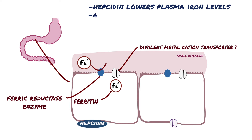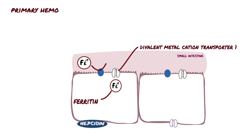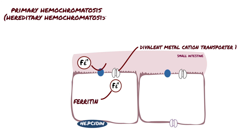Conversely, a deficiency in hepcidin causes iron overload. Someone could have primary or secondary hemochromatosis. Primary hemochromatosis is also sometimes called hereditary hemochromatosis. In hereditary hemochromatosis, regulation of intestinal absorption of dietary iron is abnormal. As we mentioned before, the main regulator of iron absorption is the protein hepcidin.